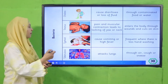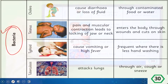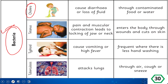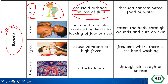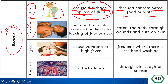Bacteria cause several diseases. The first is cholera — it causes vomiting, diarrhea, and loss of fluid from the body. The mode of transmission is through contaminated food or water: eating contaminated food or drinking dirty water can give you cholera.